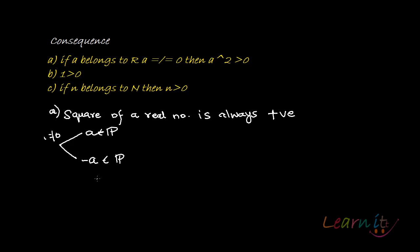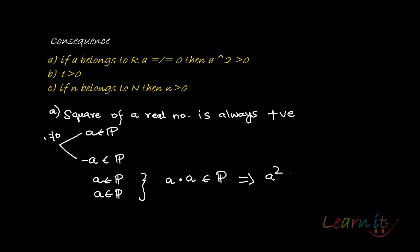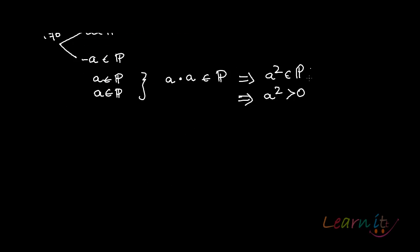Case one: we take a as a positive real number. Then by definition of P, I can multiply a with a. If I multiply a with a, that product also belongs to the positive real number set, because I am multiplying positive with positive. This implies a squared belongs to P, which implies a squared is greater than zero. It's very important that you write each and every step with reasons when doing real analysis.